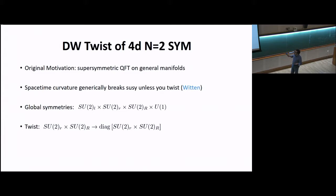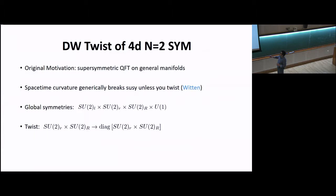Once you go away from flat space, generically supersymmetry will be broken, which you can easily see if you look at the Killing spinor equation. The way to fix that is to compensate the breaking of supersymmetry by space-time curvature with r-symmetry curvature. Put another way, you have to identify some subgroup of the Lorentz group with some subgroup of the r-symmetry group — and that, in a nutshell, is what twisting is.